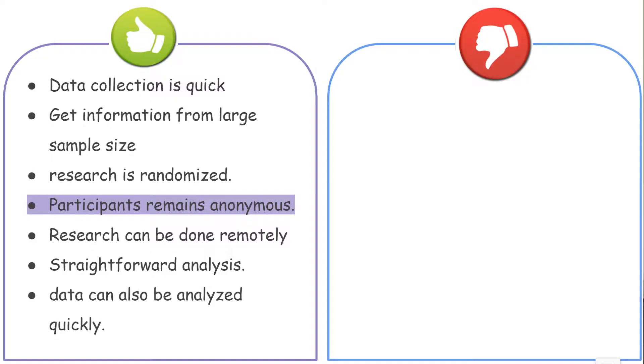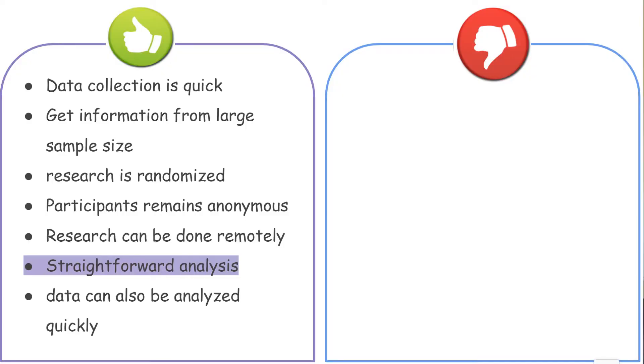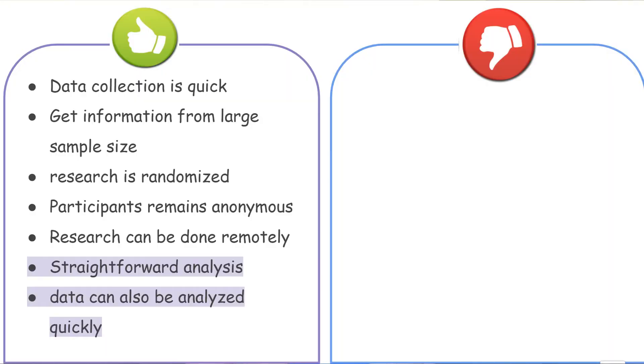Participants remain anonymous, so because participants are not required to reveal their personal information or identity, their privacy remains intact. Research can be done remotely using online tools like SurveyMonkey. The analysis is also pretty straightforward — the user researcher or data analyst makes use of various mathematical and statistical tools to analyze the information, which is easy and efficient.